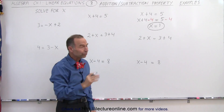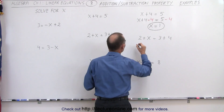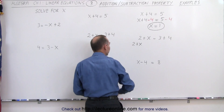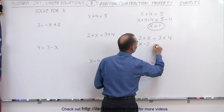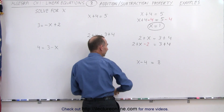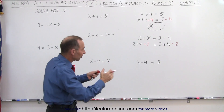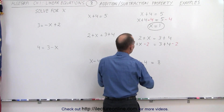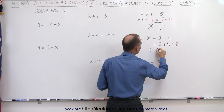In our second example, notice we have a plus 2 on the left side. We want to get rid of that, so we're going to subtract a 2 from the left side. This becomes minus 2 on the left side, and of course if we subtract a 2 from the left side, we must also subtract a 2 from the right side. The property requires that we do exactly the same thing on both sides of the equation. So 2 minus 2 is 0, we end up with x on the left side, and 3 plus 4 is 7, minus 2 is equal to 5.